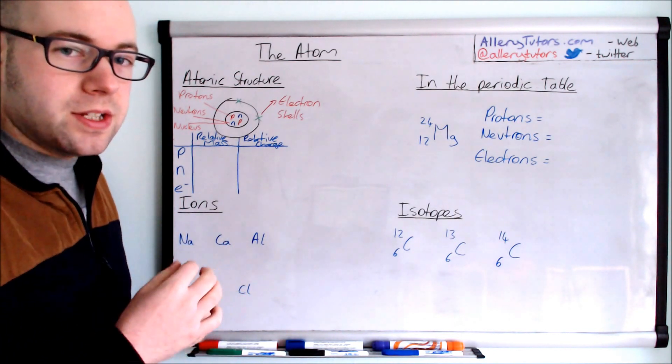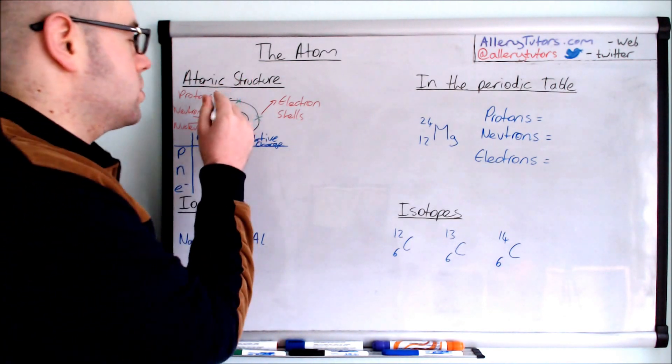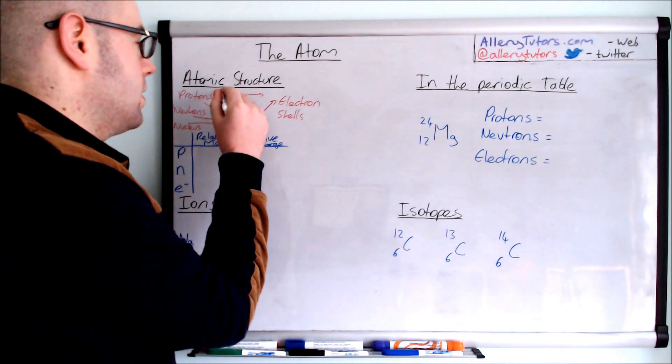Another feature which you need to know about the atom as well is about the size of the atom. So this is called the atomic radius.